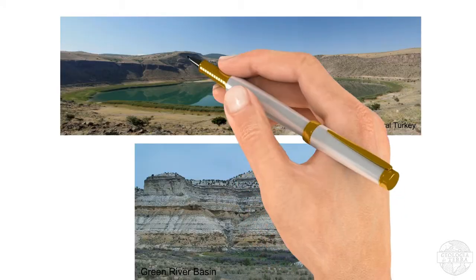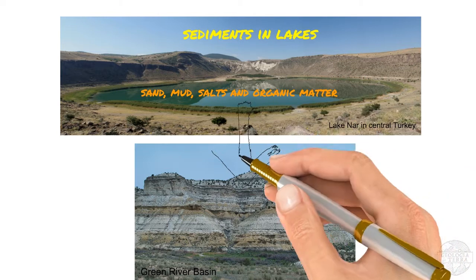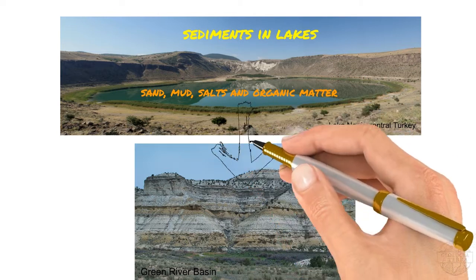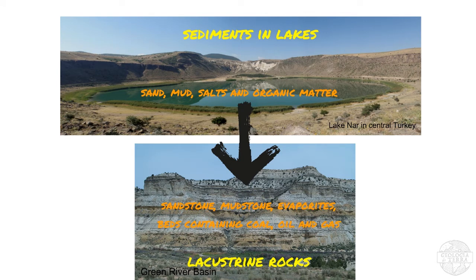The most common lake sediments are sand and mud, but other sediments like salts and organic matter are often present. Therefore, the lithologies we usually find in paleo lakes are sandstone, mudstone, limestones, evaporites, and sometimes beds of coal, oil and gas source rocks. The study of modern lakes is referred to as limnology.